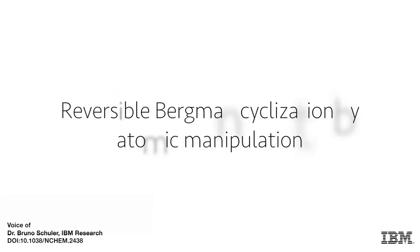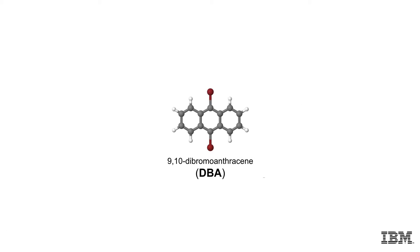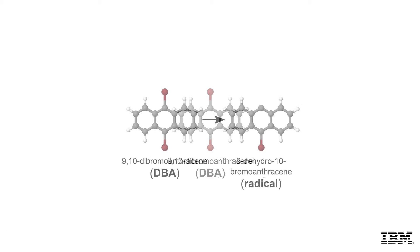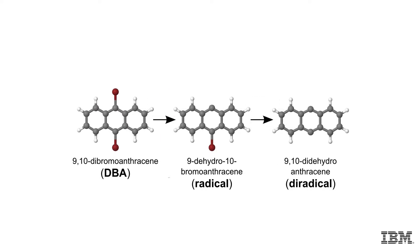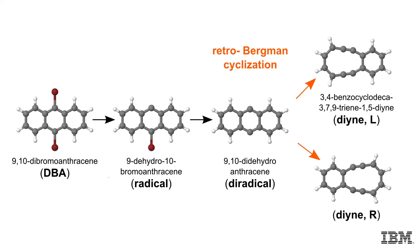In this study we demonstrate a reversible Bergmann cyclization reaction in a single molecule. Starting from the bromoanthracene, we created a radical and di-radical intermediate by sequentially splitting off the two bromine atoms from this molecule by applying a voltage pulse to the scanning probe tip. By yet another voltage pulse to the di-radical, it undergoes a so-called retro-Bergmann cyclization, where a bond between two 6-membered rings gets cleaved.